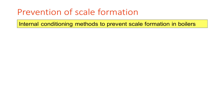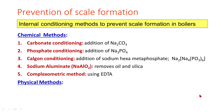Internal conditioning methods to prevent scale formation in boilers involve chemical and physical methods. Chemical methods include carbonate conditioning by the addition of sodium carbonate, phosphate conditioning by the addition of sodium phosphate, chalgone conditioning by the addition of sodium hexametaphosphate, sodium aluminate to remove oil and silica, and the complexometric method using EDTA — ethylenediamine tetraacetic acid.